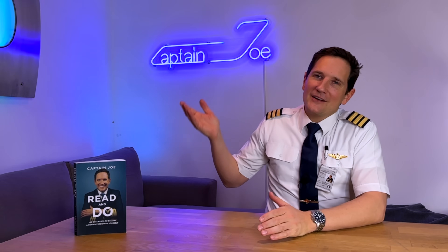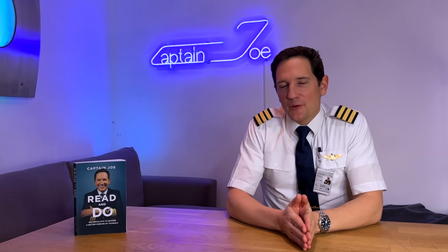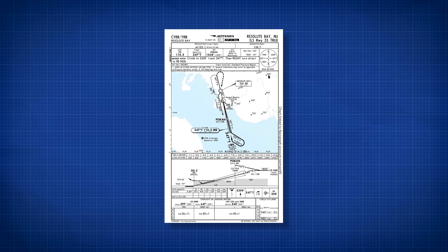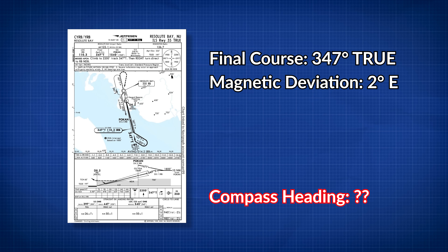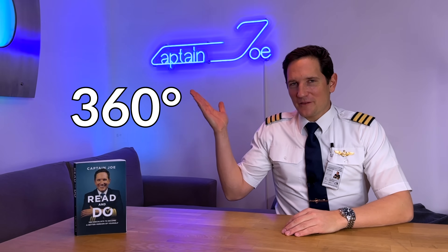Here are the results of those 3 exercises. And as mentioned, let's say we were to fly into Resolute Bay, requiring us to fly their ILS approach onto runway 35 with a final course of 347 true. What heading would you fly on your magnetic compass with a compass deviation of 2 degrees east, a westerly variation of 25 degrees, and a 10-degree wind correction angle coming from the west? Pause and do the calculations — and here is the magnetic heading you should be flying. If you got it right, high five!